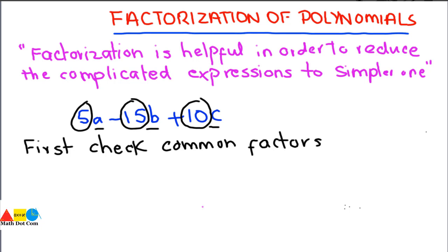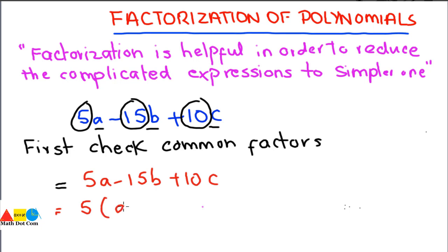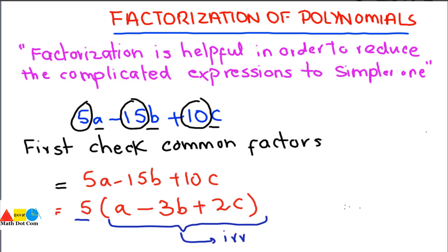We can take the common factor 5 out of the expression. So 5a minus 15b plus 10c becomes 5 times (a minus 3b plus 2c). The expression inside the bracket is now irreducible — we cannot simplify it further. So these are the two factors of the given expression.